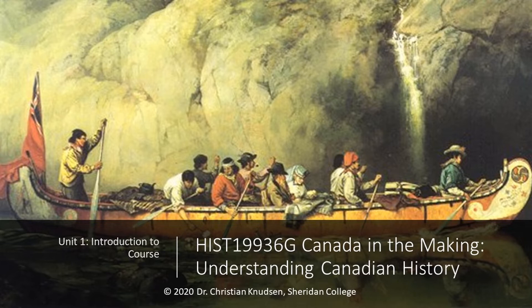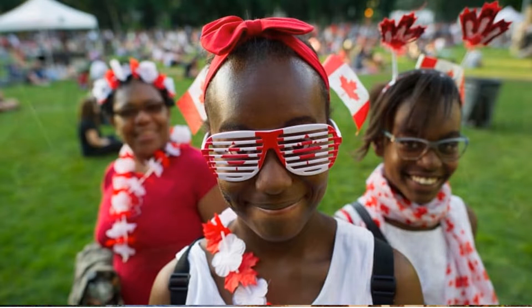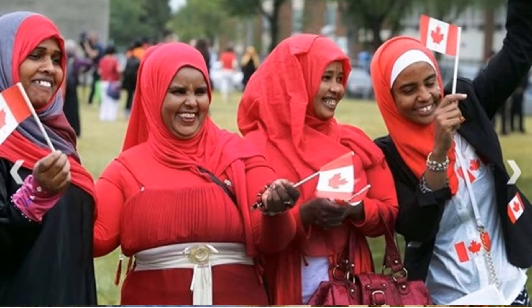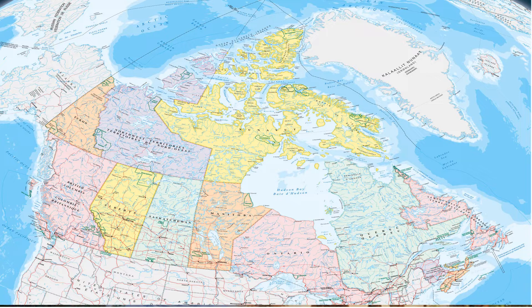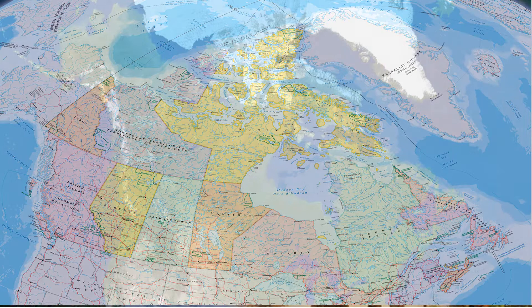In this course, we will be exploring the rich and exciting history of the country of Canada. Canada today has a population of nearly 38 million people. Our nation is diverse, with two official languages along with thousands of others spoken every day. Its ten provinces and three territories extend from the Atlantic to the Pacific and northward into the Arctic Ocean, covering almost 10 million square kilometres, making Canada the world's second largest country by area.